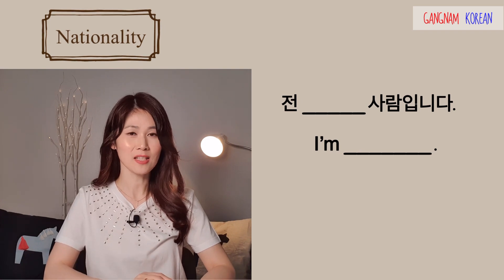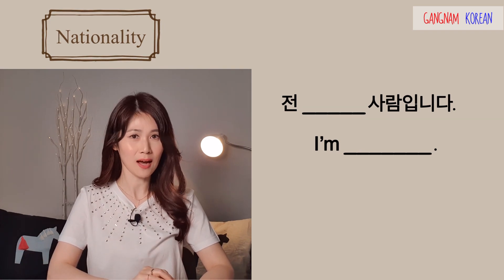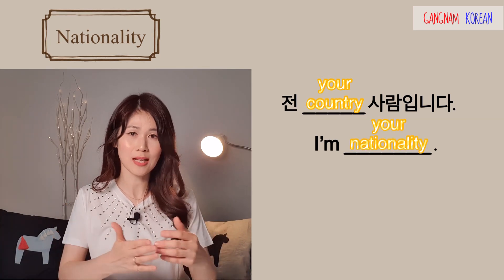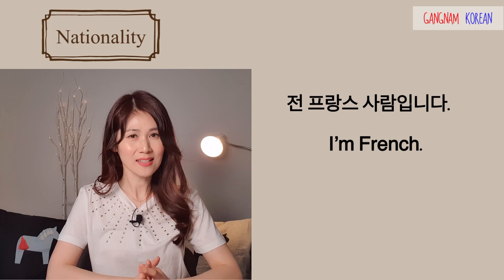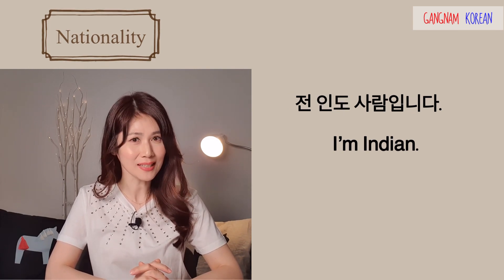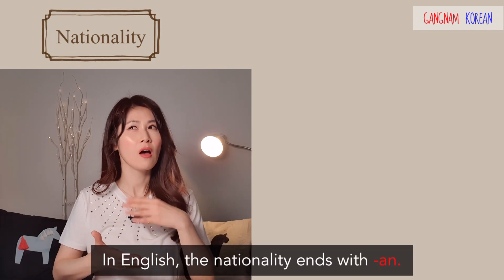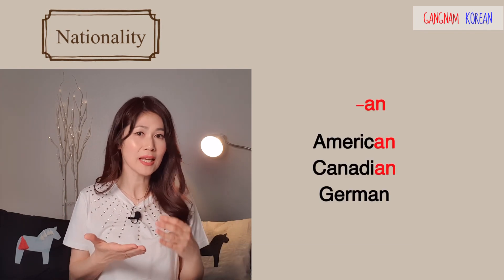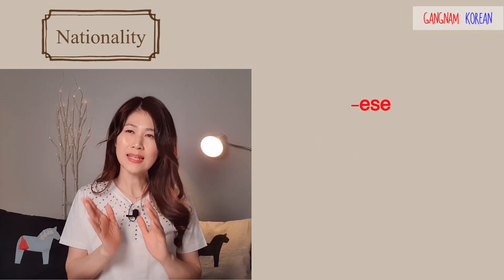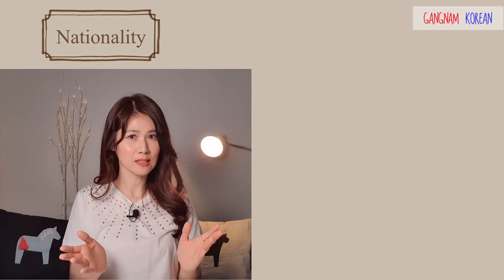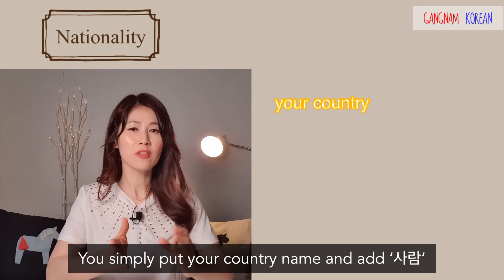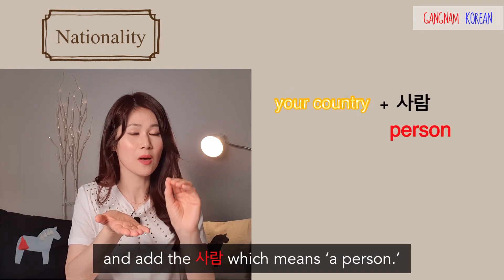The second pattern is 전 ~~사람입니다. You put your own country name in the blank — this shows your nationality. For example, 전 프랑스 사람입니다 — I'm French. 전 인도 사람입니다 — I'm Indian. In English, nationality ends with -n like American, Canadian, German, or -ish like Scottish, Irish, British, or -ese like Vietnamese. But in Korean it's a lot simpler — you simply put your country name then add the word 사람, which means 'a person'.